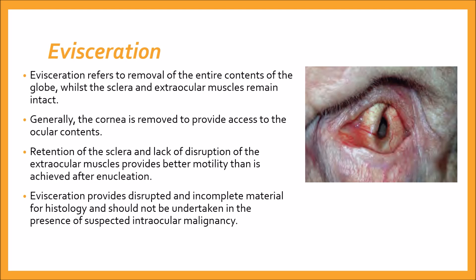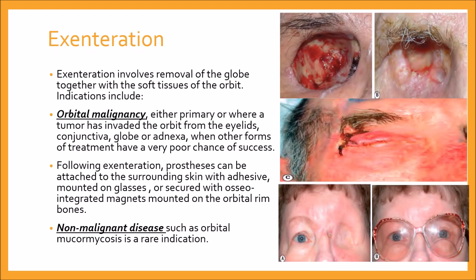Here you can see the remainder of the eye after enucleation. The next procedure is exenteration. Exenteration involves removal of the globe together with the soft tissue of the orbit. Indications include orbital malignancy — either primary or where a tumor has invaded the orbit from the eyelids, conjunctiva, globe, or adnexa — when other forms of treatment have a very poor chance of success. Anteriorly sited tumors may allow relative sparing of the posterior orbital tissue, and posterior tumors may allow sparing of eyelid skin to line the socket.